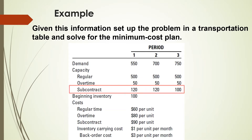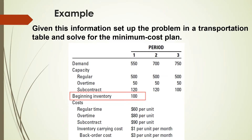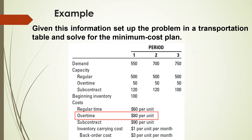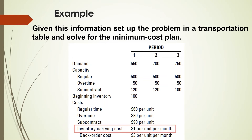It is given that the beginning inventory is 100 units. The given costs are $60 for production of 1 unit during the regular time, $80 for production of 1 unit during overtime, and $90 for production of 1 unit by the subcontractor. The cost of carrying 1 unit in inventory is $1 per period, and the backorder cost is $3 per unit per period.